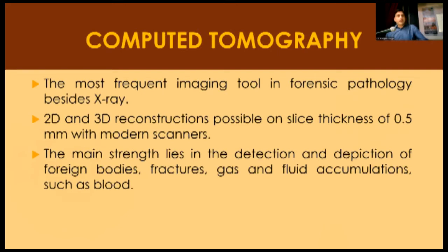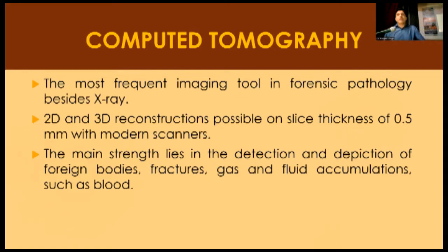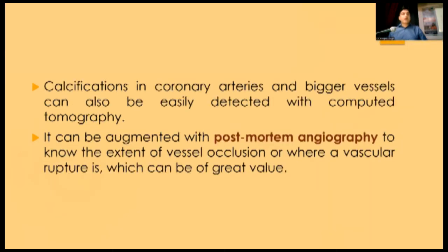Computed tomography is the most frequent imaging tool in forensic pathology apart from X-rays. With the latest advancements in multi-detector CT scanners, 2D and 3D reconstructions are possible with a slice thickness of 0.5 mm. The main strength of CT lies in the detection of foreign bodies, fractures, gas, and fluid accumulation such as blood. Calcification in coronary arteries and larger vessels can also be detected.